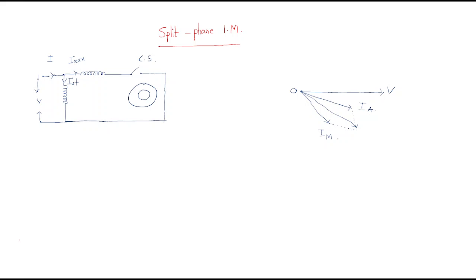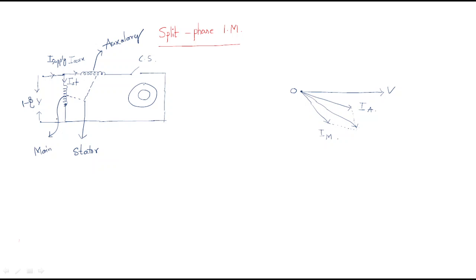Now we discuss the split phase induction motor. We have a single phase supply with supply current, and the stator windings are split into two parts. One winding is called the main winding and the other is called the auxiliary winding. Using both main and auxiliary windings together, the motor can be started.